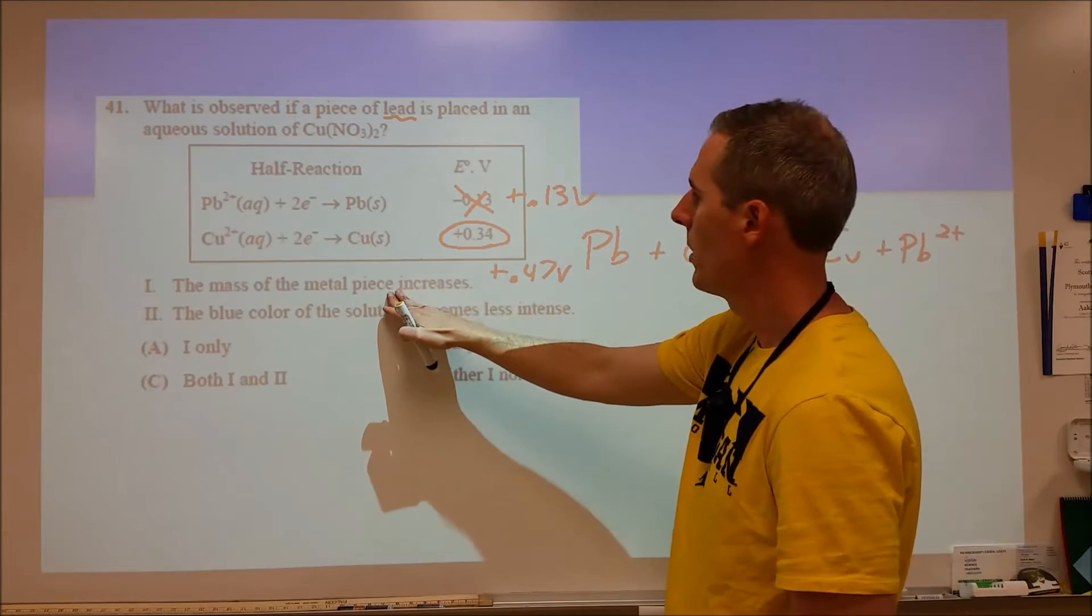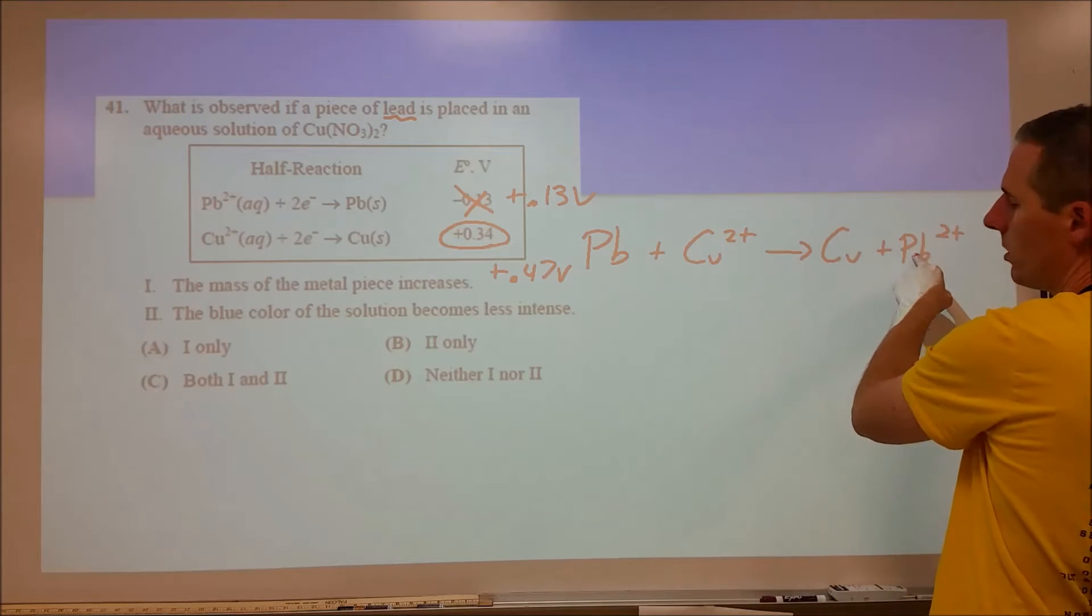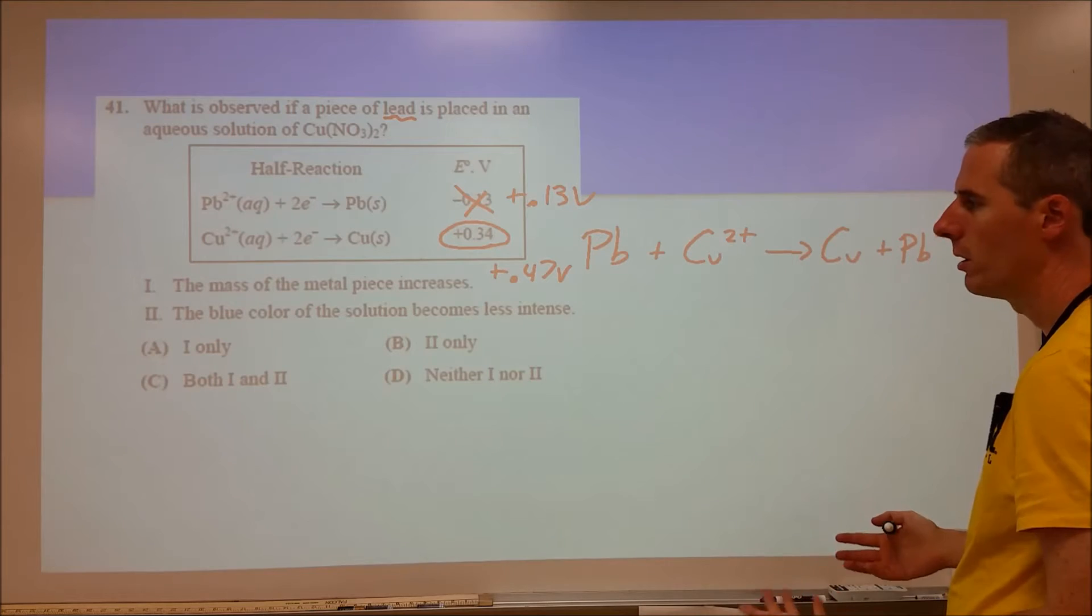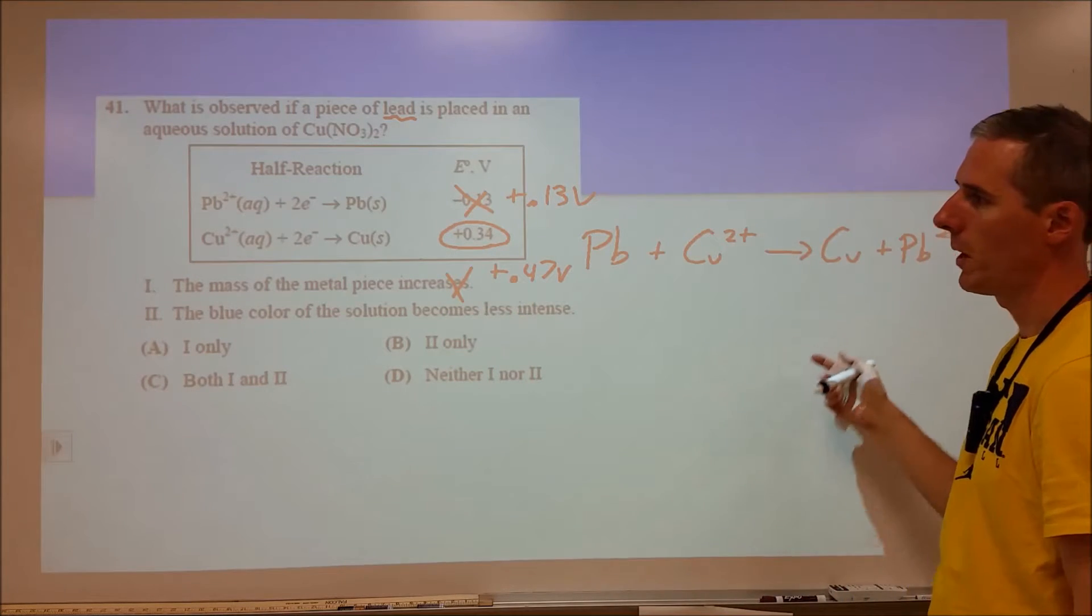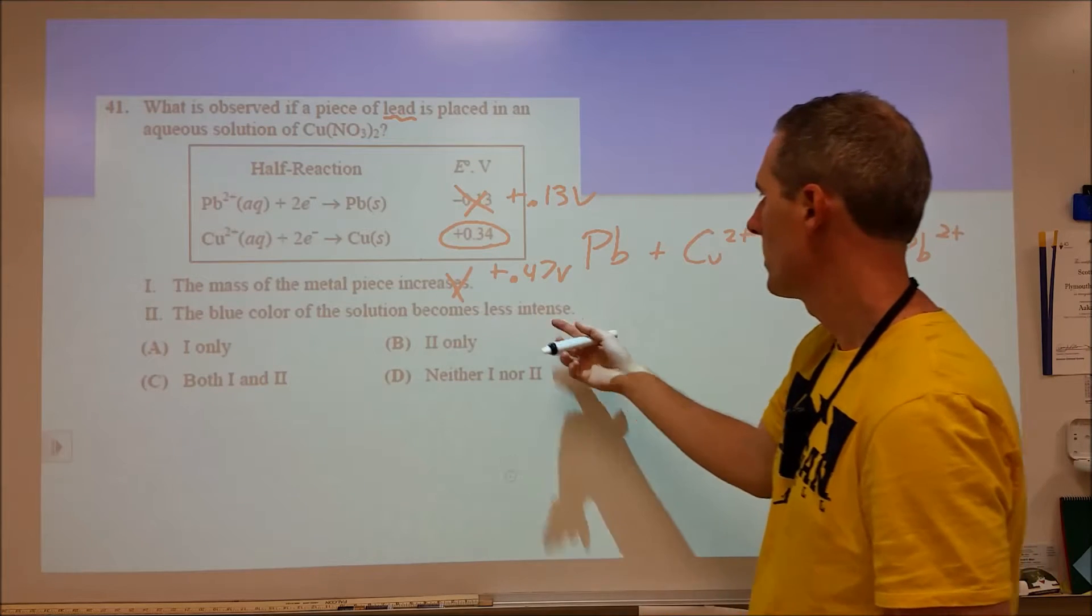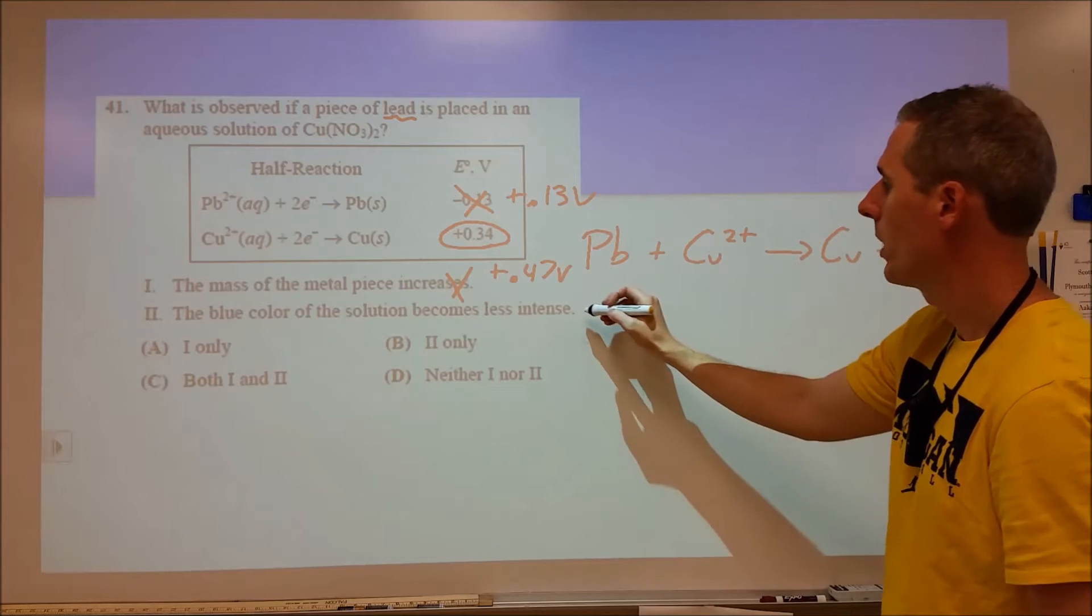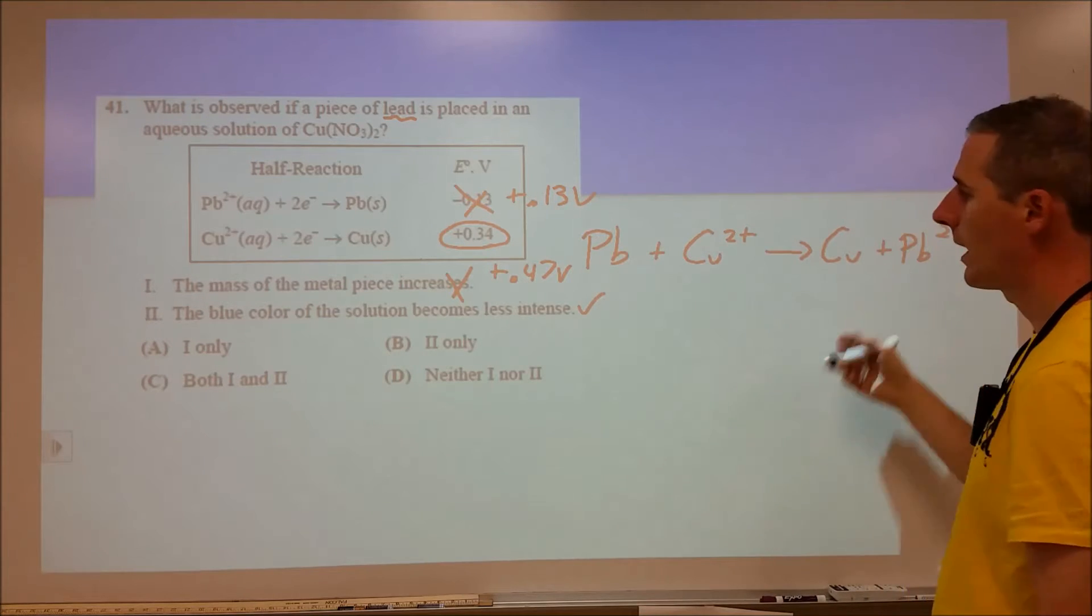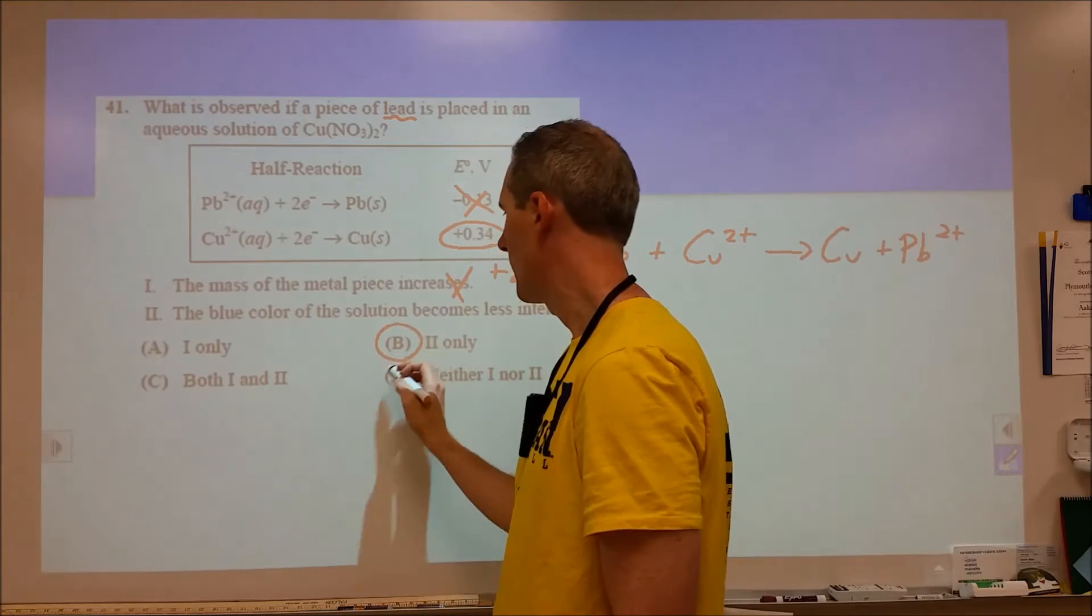We're going to have lead metal turning into lead ions and copper ions turning into copper metal. The first one says the mass of the metal piece increases. That's not true because our lead is turning into ions that go into solution, so the mass is going to decrease. The blue color of the solution becomes less intense. That is true because copper 2 plus gives this blue color. As that turns into copper metal, that blue color fades. So 2 is correct and 1 is not, leading us to B.